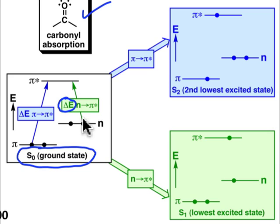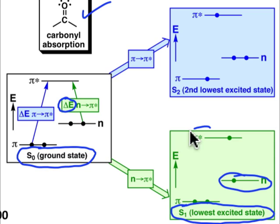And so if the energy of the photon matches the difference in energy between the n and the π* state, the result is what's known as the lowest excited state configuration for the carbonyl group, the S1 state, which has a singly occupied non-bonded level and a singly occupied π* level.